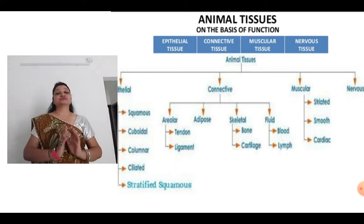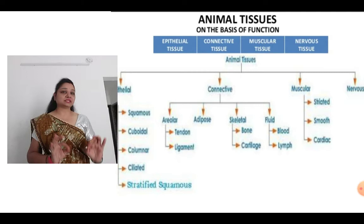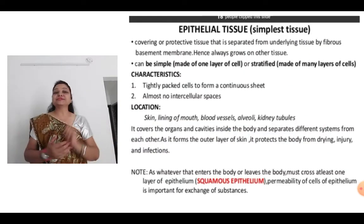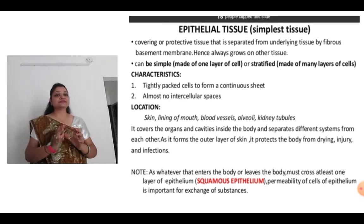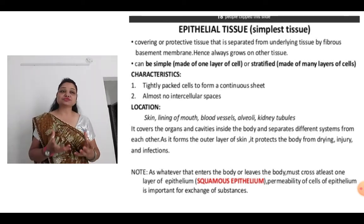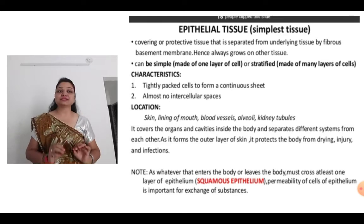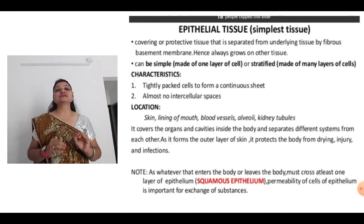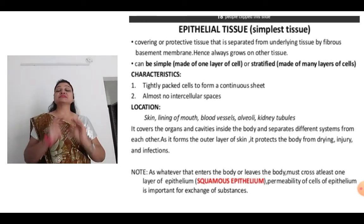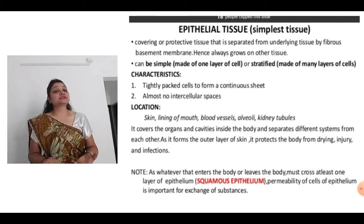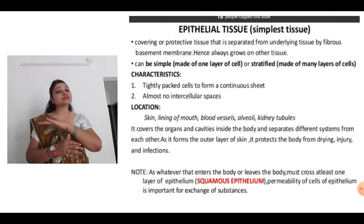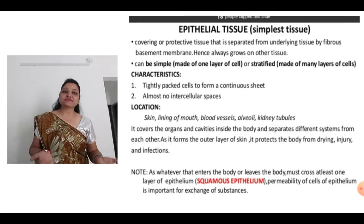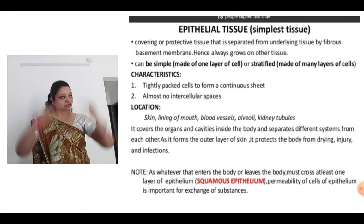Today we are going to discuss about the epithelial tissue and its subtypes. The epithelial tissue is the simplest one. It is a covering or protective tissue that is separated from the underlying tissue by a fibrous basement membrane, hence it grows on other tissues. It can be simple — when it is made up of one layer of cells — or stratified if it is made up of many layers of cells.